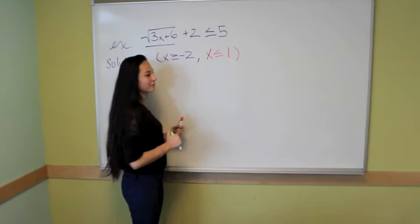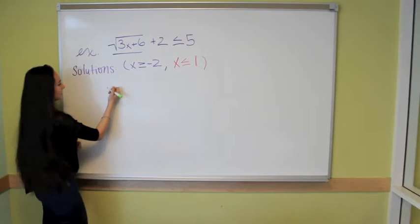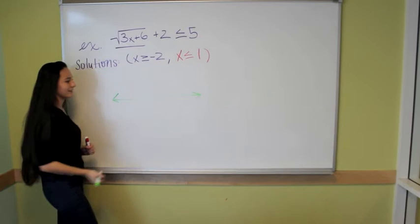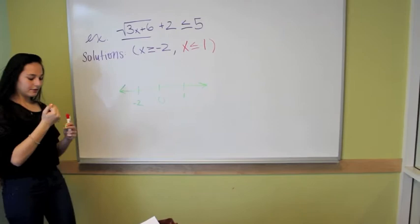Our last step is to graph the solutions that we have. So here are our solutions. x is greater than or equal to negative 2. And x is less than or equal to 1. So our first graph will look like this. We're going to make a number line. So we're going to put negative 2 over here. Zero in the middle. And our other solution right there.